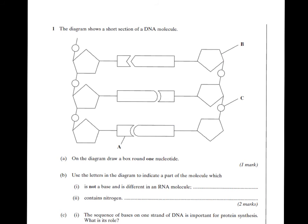This question asks you to draw a box around one nucleotide. Any nucleotide is okay so long as you have circled a phosphate, a sugar, and a base. Part B asks which part is not a base but is different in an RNA molecule. You should know that the only parts that are different between DNA and RNA are the bases and the pentose sugar, so the answer is B. You should also know that it is the bases that contain nitrogen, so this answer is going to be A.